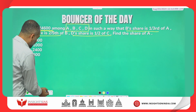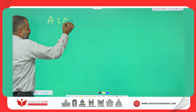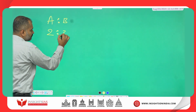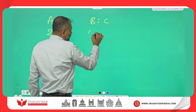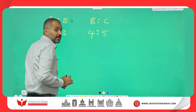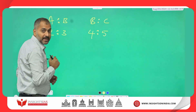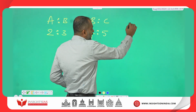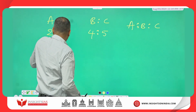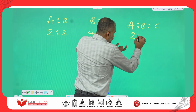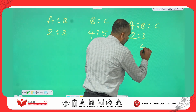Here I will explain how to equate a ratio. For example, if A and B are in the ratio 2 is to 3, and B and C are in the ratio 4 is to 5. Ratio means comparison — this is the comparison of A and B, and this is the comparison of B and C. If I ask you to find the ratio of A is to B is to C, you put 2 is to 3 here, and in the place of B and C you write 4 is to 5.